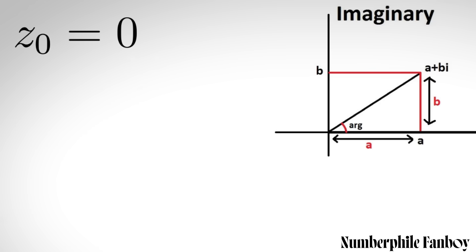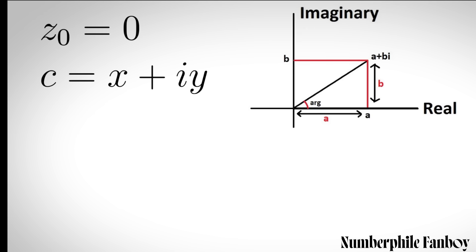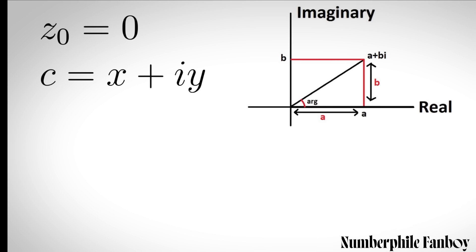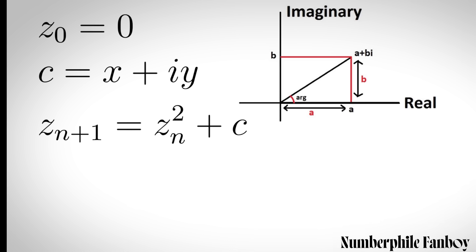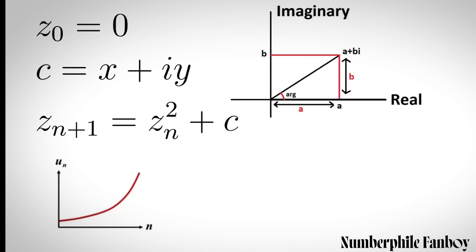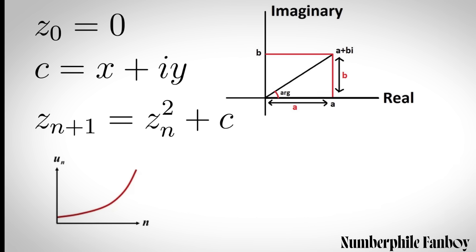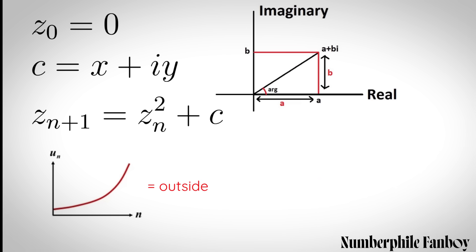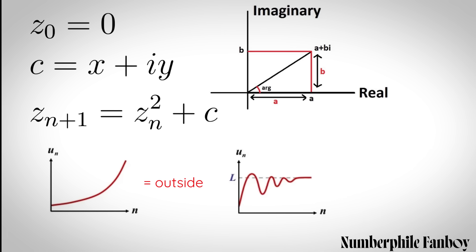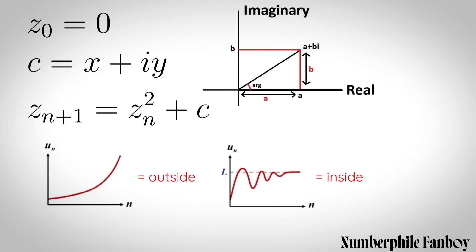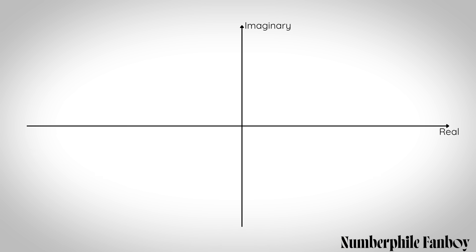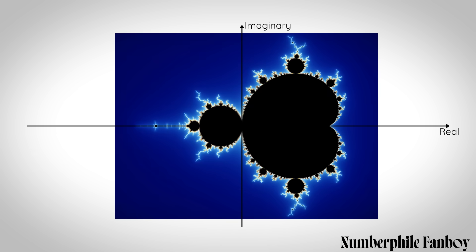The Mandelbrot set: start with z₀ equals 0, then pick a point c which is a complex number in the complex plane and plug it into the equation again and again forever. If the sequence of z's diverges to infinity then c is outside the Mandelbrot set; if it doesn't diverge then it's inside. If you plot all the complex numbers in the Mandelbrot set using the real axis and an imaginary axis, you get this fractal.